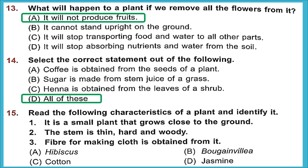Question 15: Read the characteristics of a plant and identify it. It is a small plant that grows close to the ground; the stem is thin, hard, and woody — that is a shrub. Fiber for making clothes is obtained from it — that points to cotton. Option C — cotton — is the right answer.